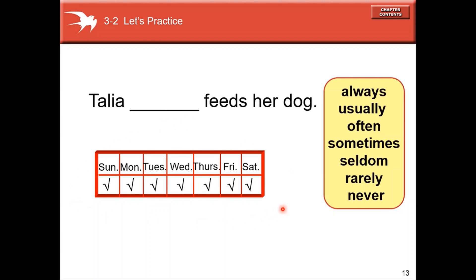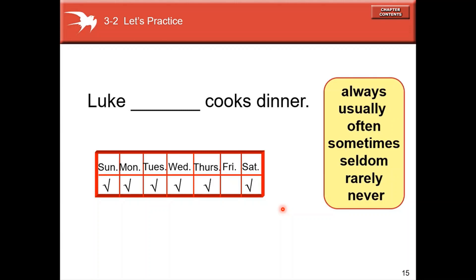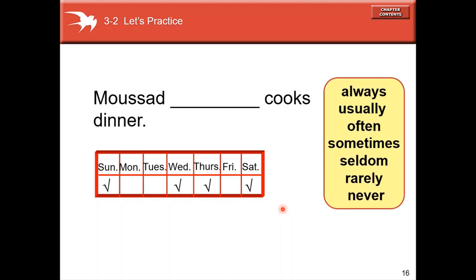Let's practice frequency adverbs. If something is done every day, the answer is 'always' — good job! If Hara only does something once a week, the answer is 'seldom' or 'rarely' — both are acceptable. If Luke cooks dinner six times a week, it's 'usually.' And if something happens about four times a week, the answer is 'sometimes.'